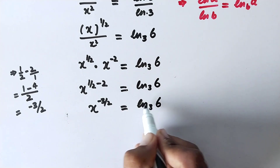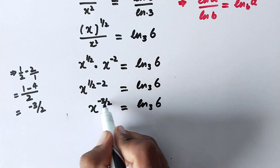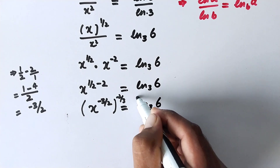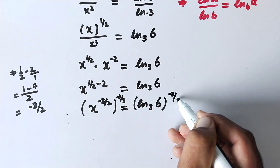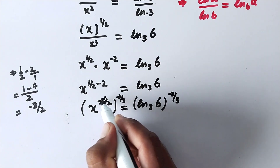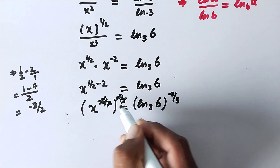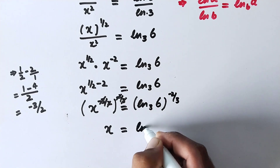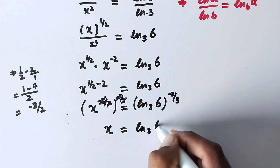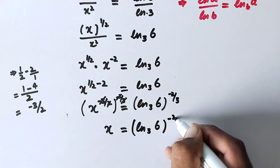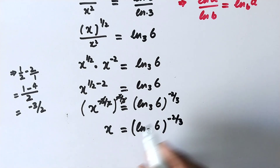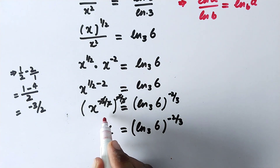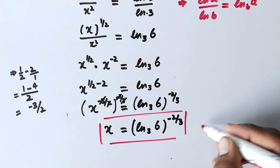Since we have to find the value of x, we need to eliminate these powers. We take both sides to the power of minus 2 over 3. The minus 3 over 2 and minus 2 over 3 cancel out, and x is equal to ln base 3 of 6 to the power of minus 2 over 3. That is the value of x and the solution to this problem.